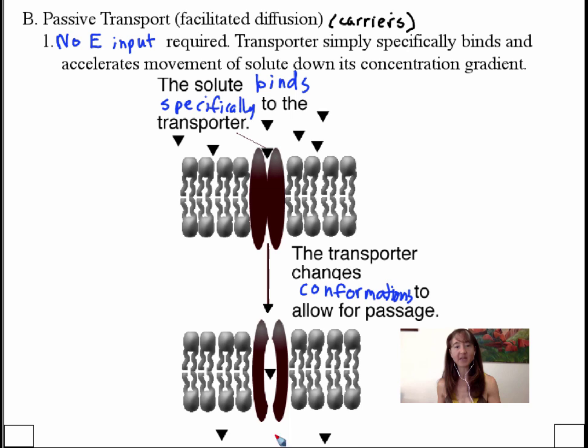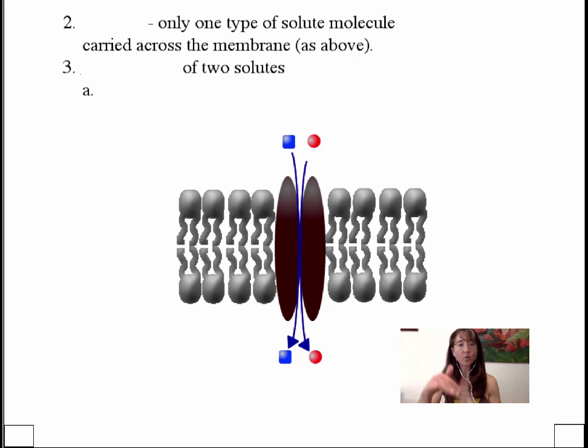We also recognize that if for some reason the concentration became lower inside the cell than outside, it would swoosh right back out, because we know that these transporters allow transport down the concentration gradient. In the previous example we showed a uniport, where there was only one solute passing through the transporter at once.